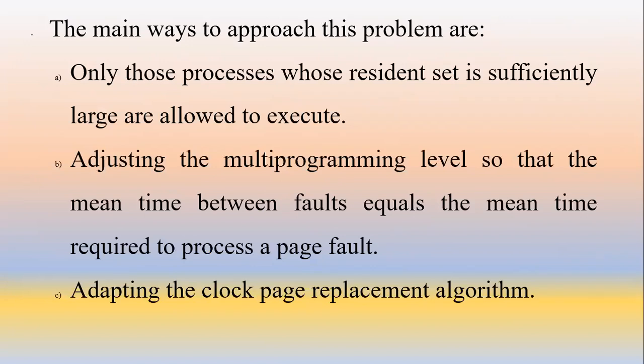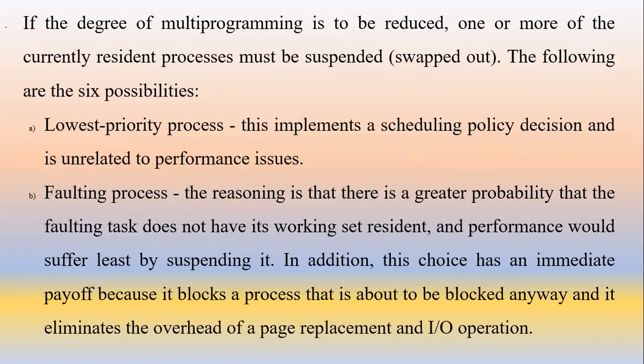The main ways to approach this problem are: number one, only those processes whose resident set is sufficiently large are allowed to execute; number two, adjusting the multi-programming level so that the mean time between page faults equals the mean time required to process a page fault; and number three, adapting the clock page replacement algorithm discussed in previous videos on the page memory allocation technique. If the degree of multi-programming is to be reduced, one or more of the currently resident processes must be suspended — that is, swapped out.